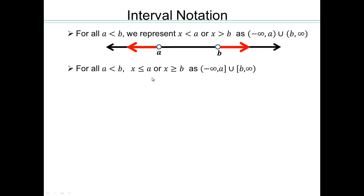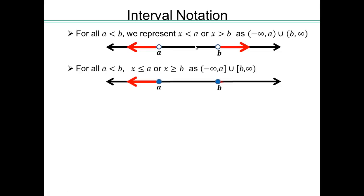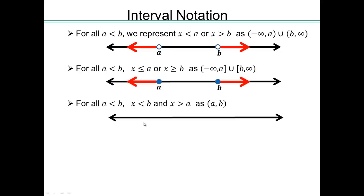For x less than or equal to a, or x greater than or equal to b: a and b are now included, same picture except a and b are filled in. That's why we have a square bracket where a is included, and a round bracket where a is not included.